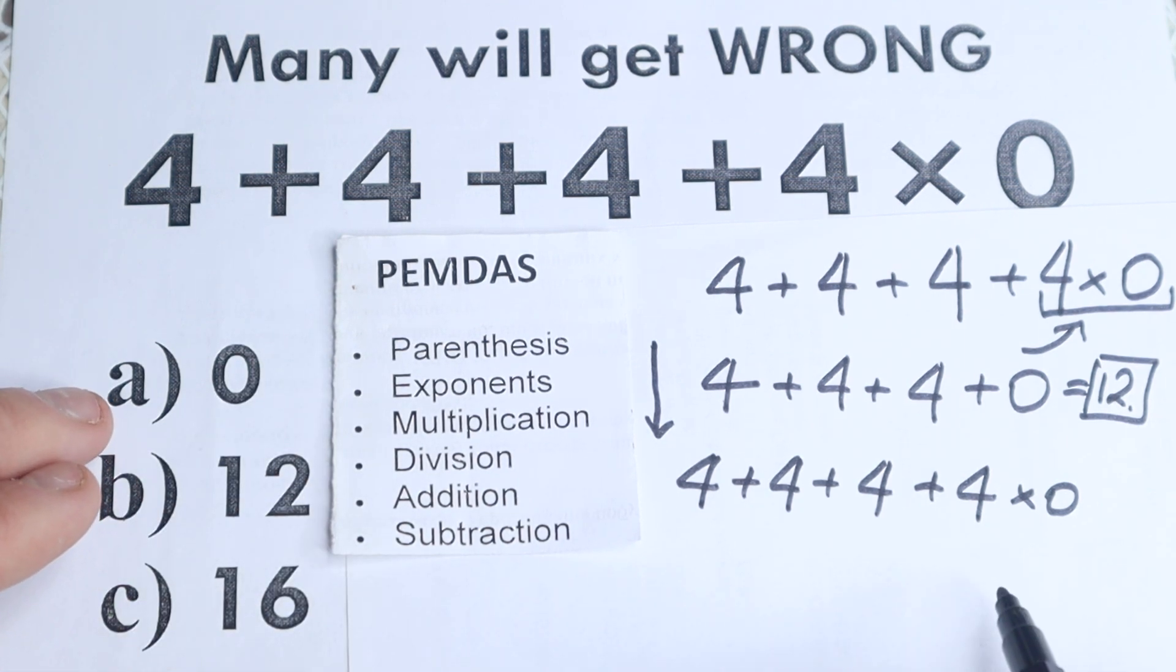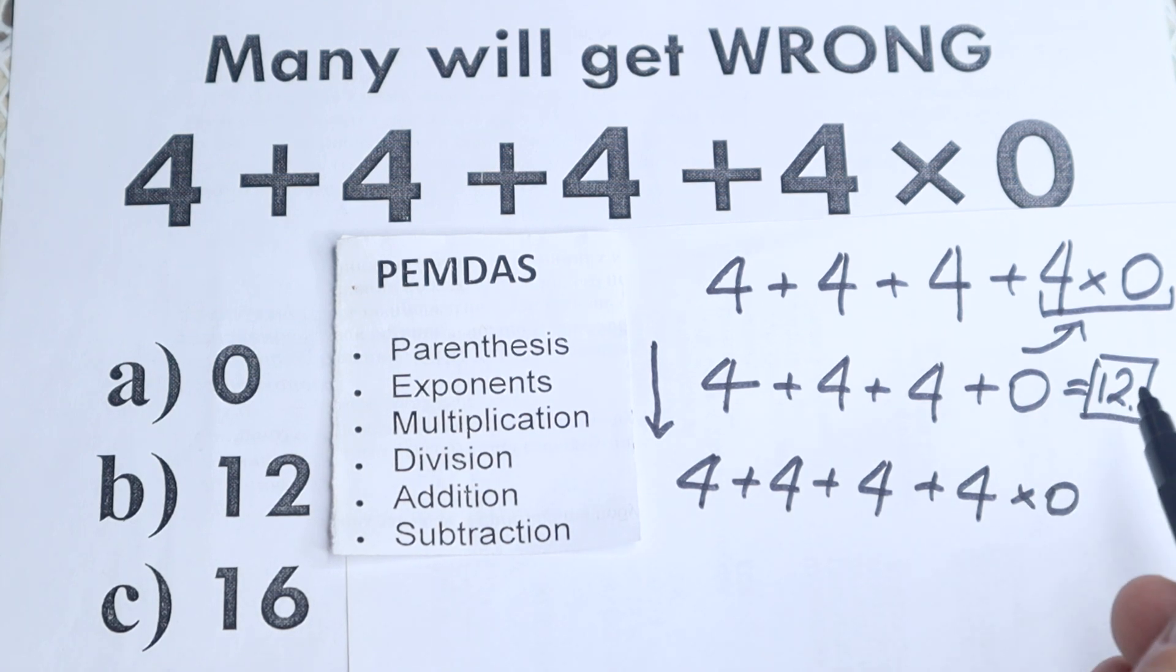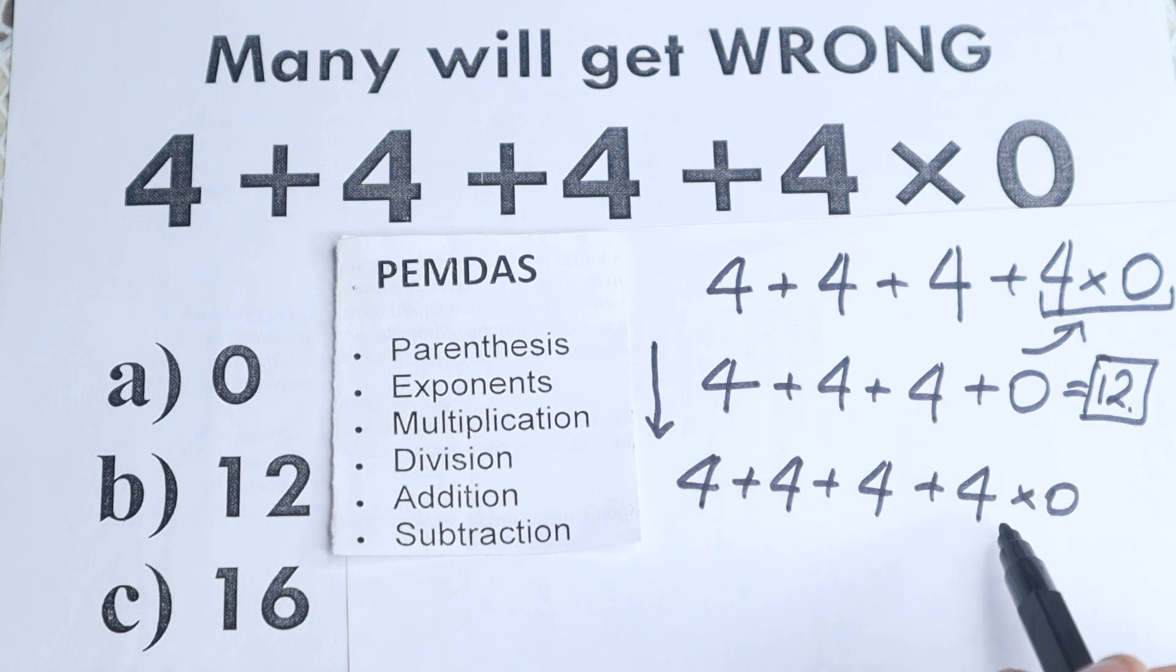And right here we have this option A, which is a very tricky moment, because a lot of students think, okay, multiplying by 0, we have 0 right here. But this is not correct, because according to PEMDAS, the correct answer is 12.